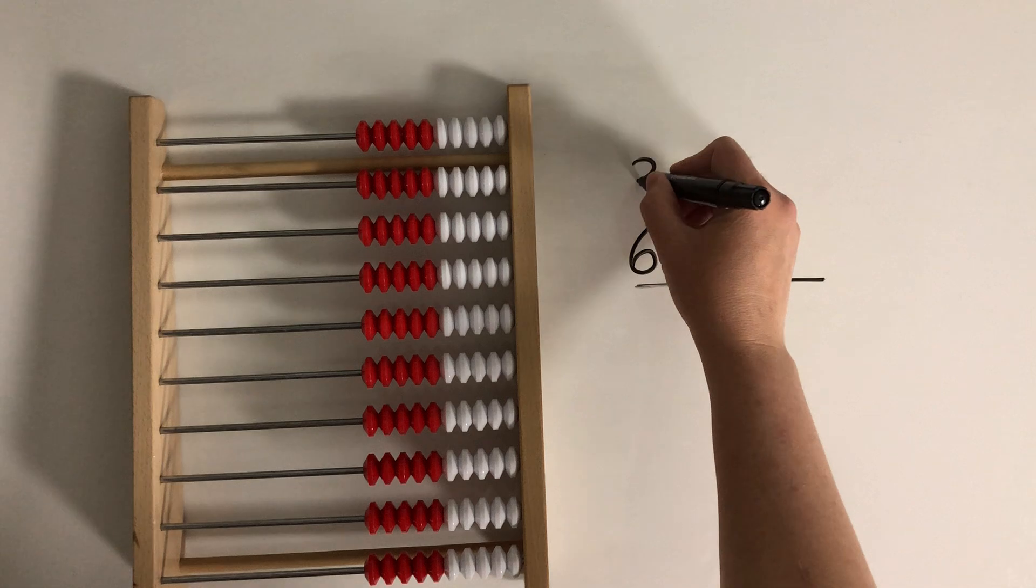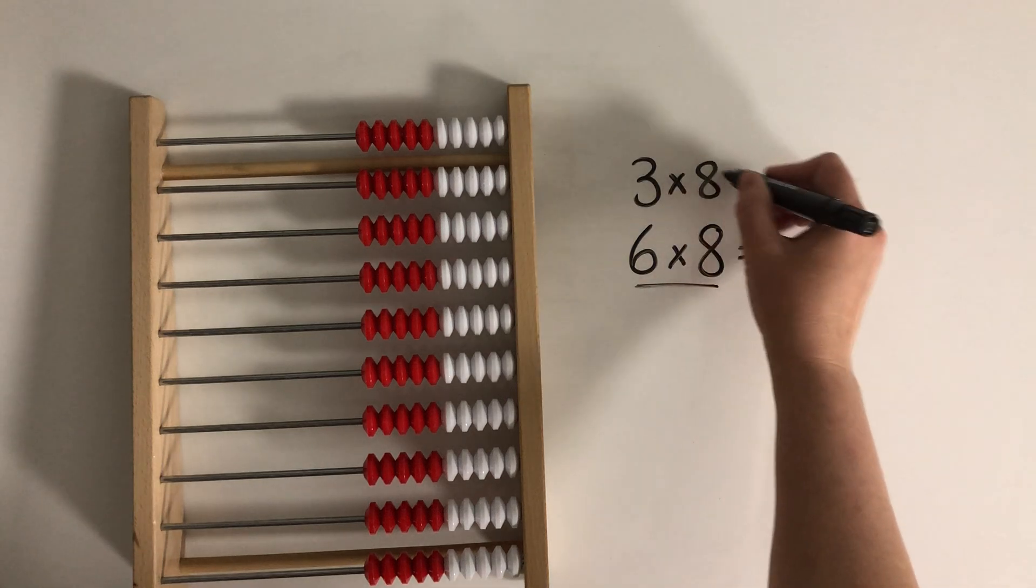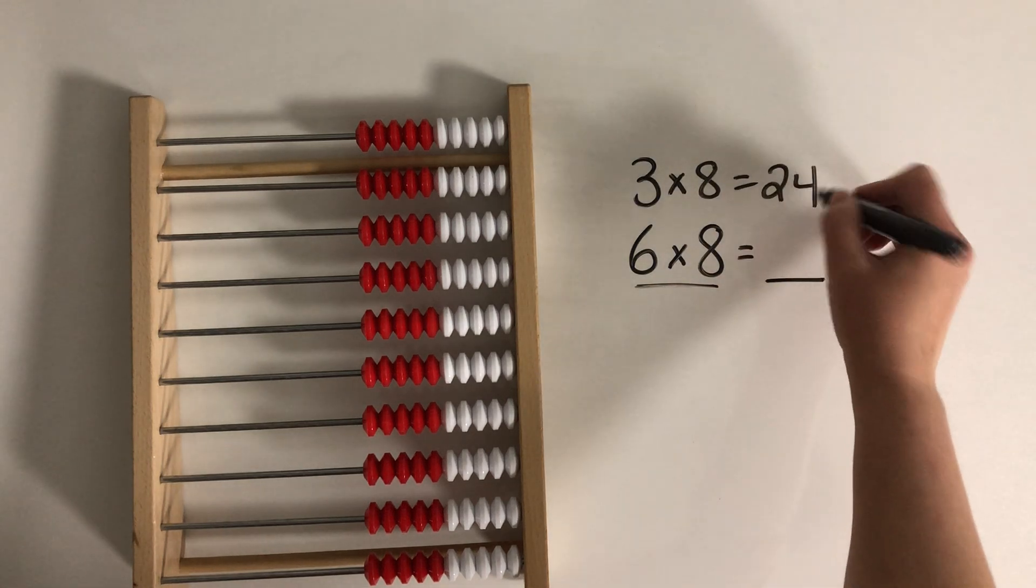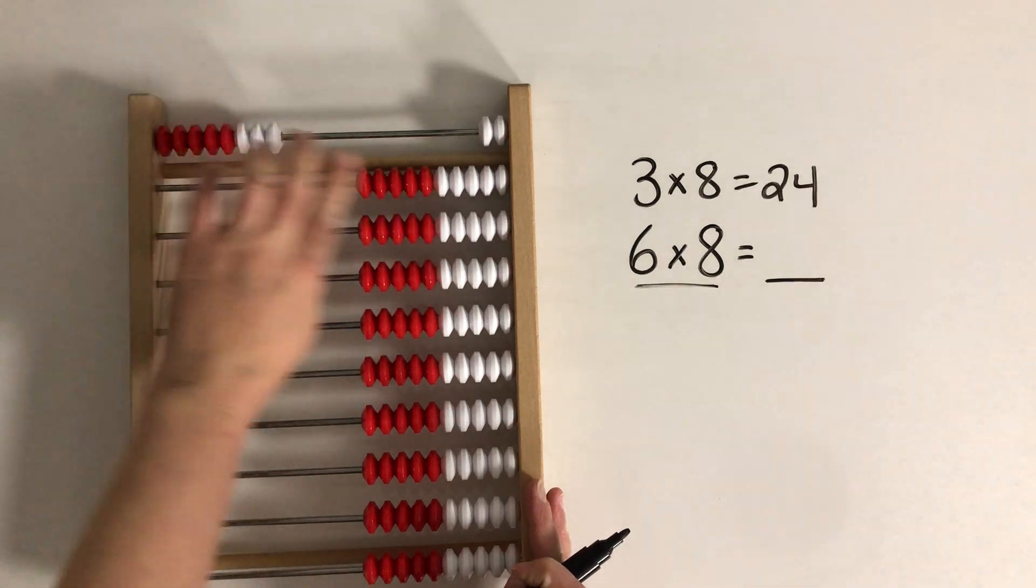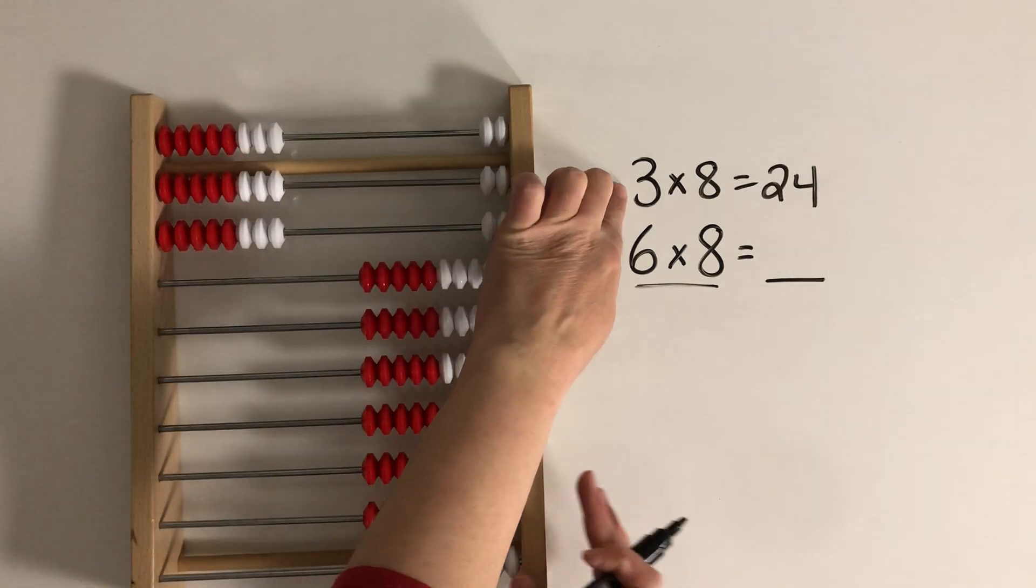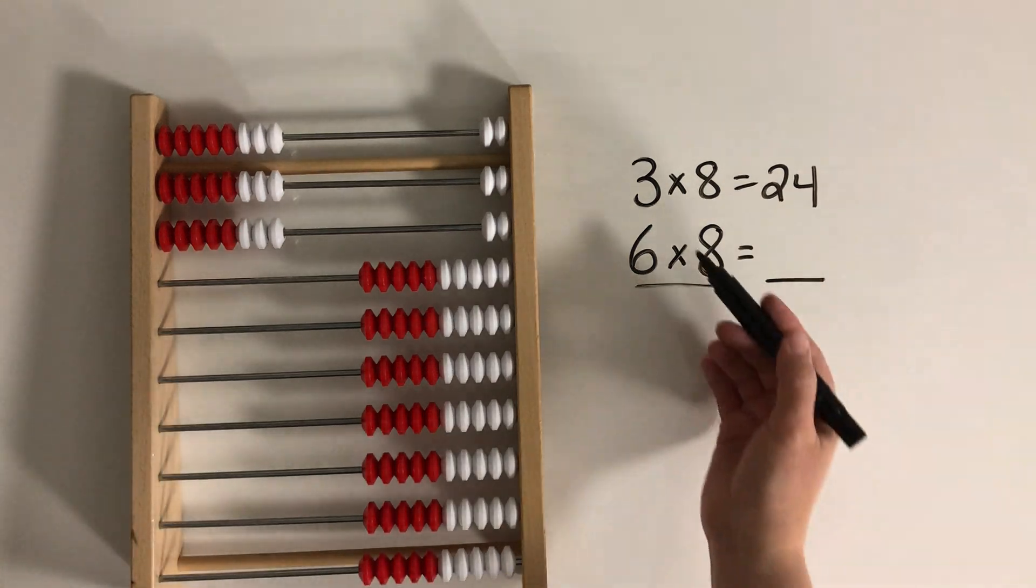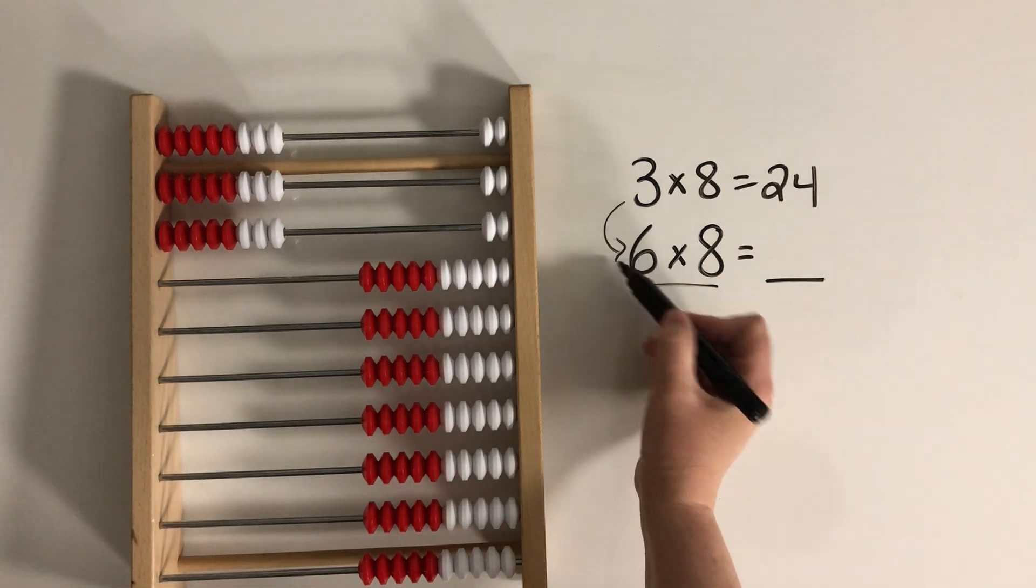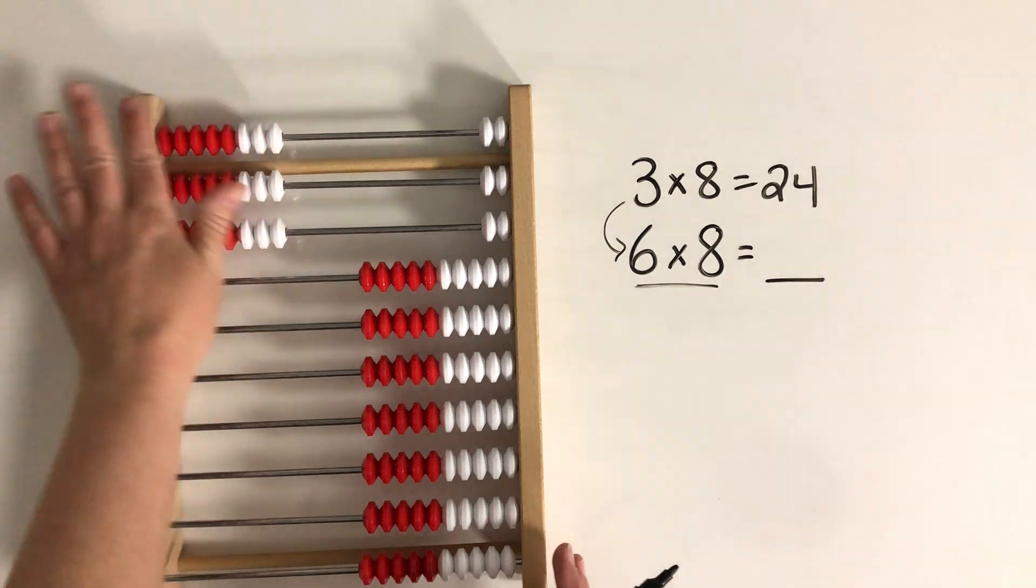So if I know that 3 times 8 makes 24. So I have 3 rows of 8 and that's 24. What do I have to do to get 6 rows of 8? I just have to double this, don't I?